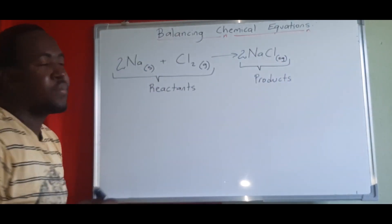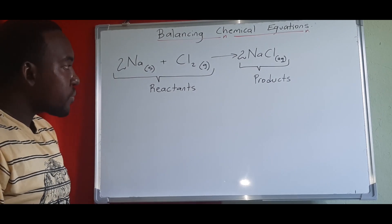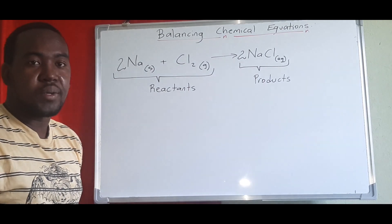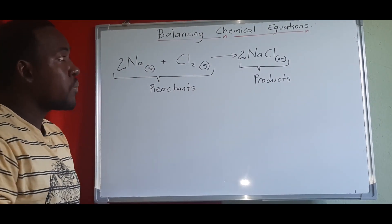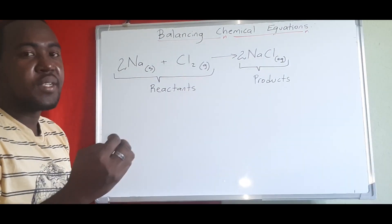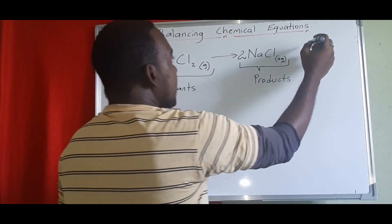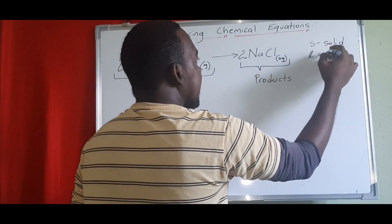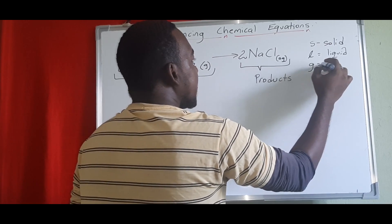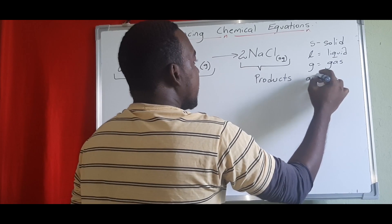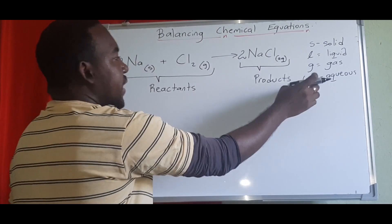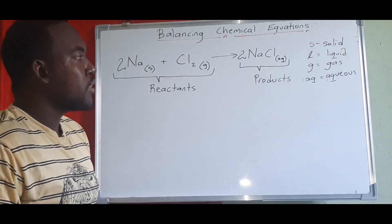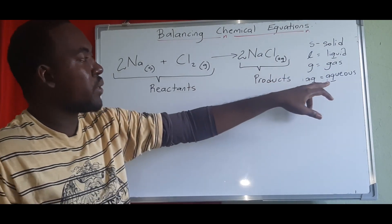You might be curious about the symbols at the bottom of equations — those are known as state symbols. State symbols tell the reader the state in which these chemicals are in a reaction. The state symbols are: (s) which represents solid state, (l) which represents liquid state, (g) which represents gas, and (aq) which means aqueous.